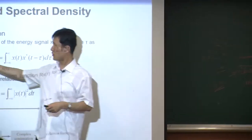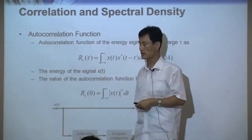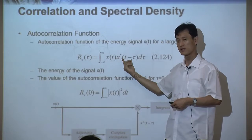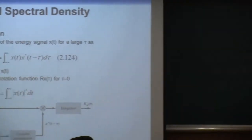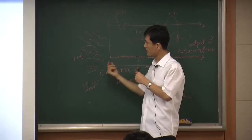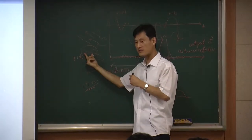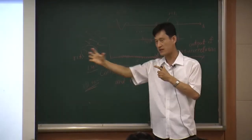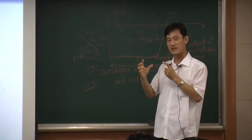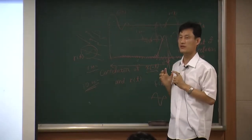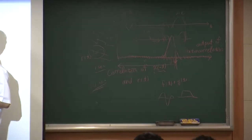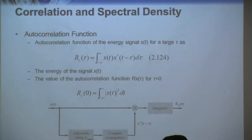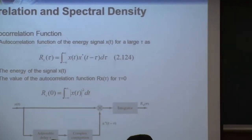Since this is autocorrelation — 'auto' meaning with itself — you are correlating x(t) with your own x(t). In the radar example, you transmit x(t) and the reflected signal is also x(t), so you are correlating your original signal with the reflected signal, which is still the same signal. That's why we call it autocorrelation.